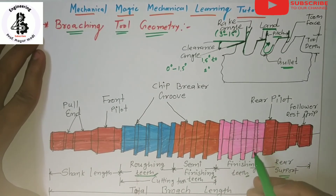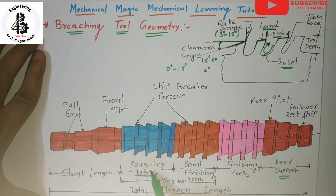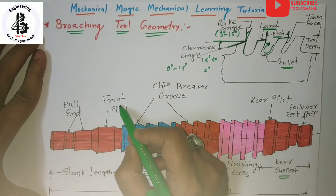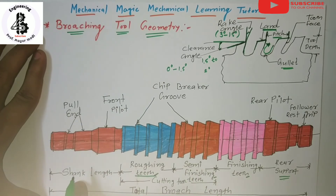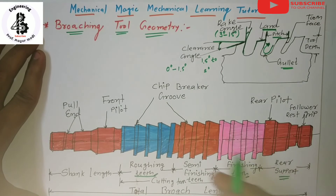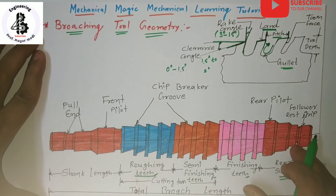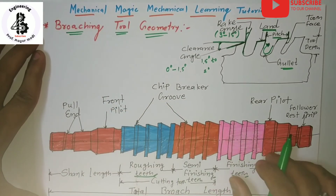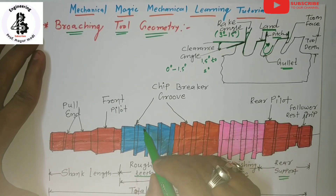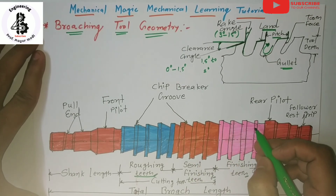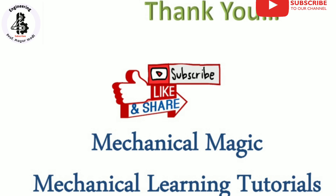The broaching tool geometry consists of three kinds of teeth: roughing teeth, semi-finish teeth, and finish teeth, allowing a finished product in a single pass. The shank length includes the pull end and front pilot. The full broach comprises shank length, roughing teeth, semi-finish teeth, finishing teeth, and rear support. Chip breakers are also used to break chips, reducing wear and tear of the broaching tool. If you like this, please subscribe and share Mechanical Magic, Mechanical Learning Tutorials. Thank you.